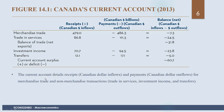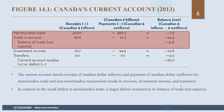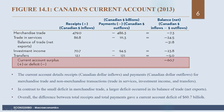The current account details receipts and payments for merchandise trade and non-merchandise transactions: exports and imports, investment income, and cash transfers between people. We had a small deficit in merchandise trade, but a larger overall deficit because of the balance of trade net exports. The total difference between receipts and payments gives a current account deficit of $60.7 billion.